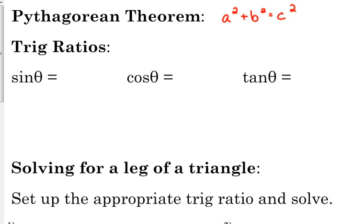We may need that at some point in time. Trig ratios: sine is opposite over hypotenuse. I abbreviate it. I don't write out the whole words. Cosine, adjacent over hypotenuse. And tangent, opposite over adjacent.